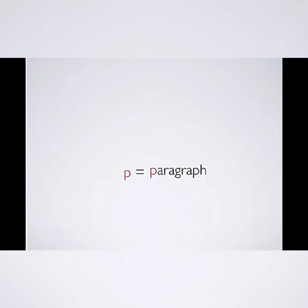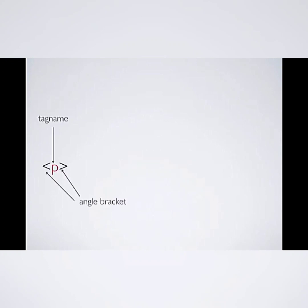Now let's look at one of the tags: P. P is a paragraph. When you write a document, you have a paragraph — it's the same thing. P represents paragraph. How do you write it? Well, you have angled brackets around it, around the tag name. And that's what's called an opening tag.